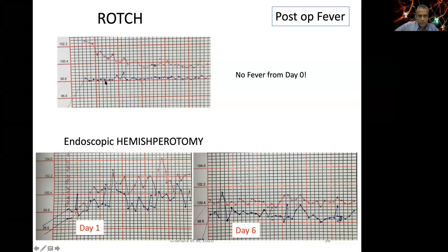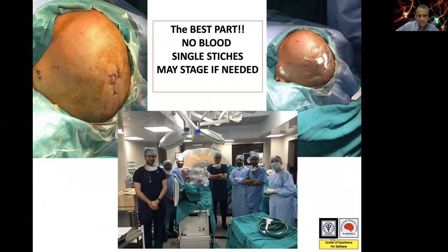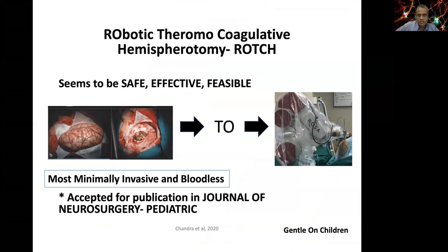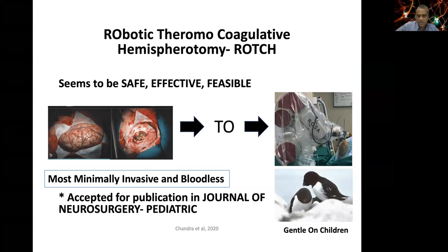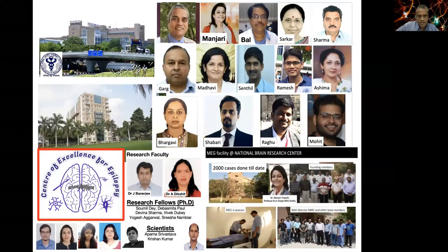This temperature chart compares the thermocoagulatory procedure above versus the endoscopic procedure below — absolutely no fever from day zero onwards in ROCH, whereas in endoscopic cases there are spikes of fever from blood in the ventricle settling by day 6 or 7. The best part: when you finish this long procedure, there is no formal closure, just a few stitches and no blood loss. Summary: Robotic thermocoagulatory hemispherotomy (ROCH) seems safe, effective, and feasible. It's accepted for publication in Journal of Neurosurgery Pediatrics and is gentle on the age group in which it's applied.